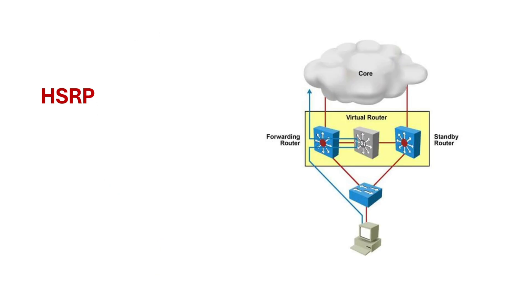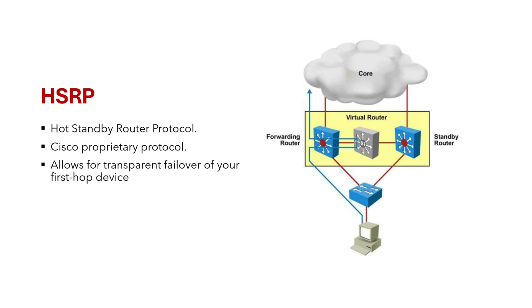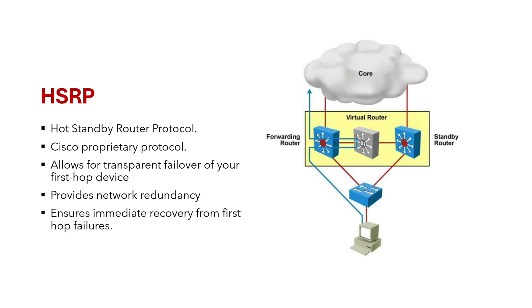HSRP, also known as Hot Standby Router Protocol, is a member of the FHRP family. It is a Cisco proprietary protocol, which means it will work only on Cisco devices. HSRP allows for transparent failover of your first hop device, which is typically your network's default gateway. It provides network redundancy for IP networks and ensures that user traffic immediately and transparently recovers from first hop failures.